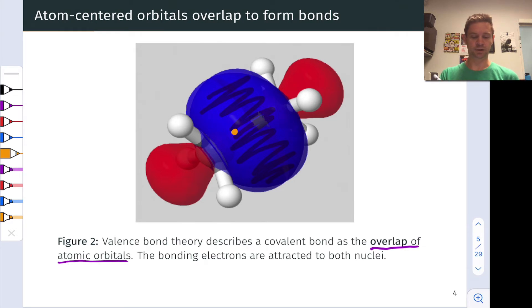For example, one electron here and one electron here, and this gives rise to the two-electron covalent bond between the two carbon centers.